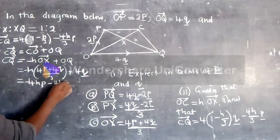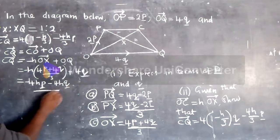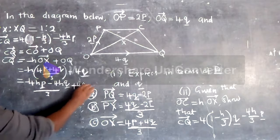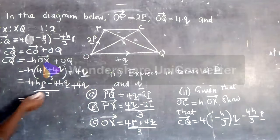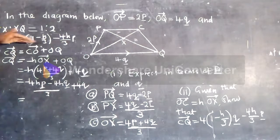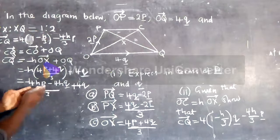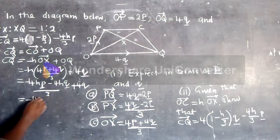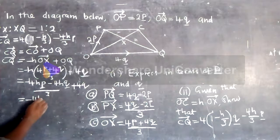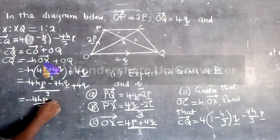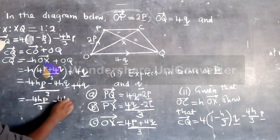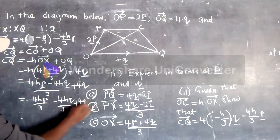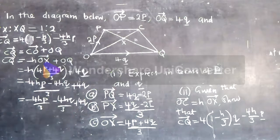From here we can separate 3 minus 4H cube over 3 plus 4Q cube.